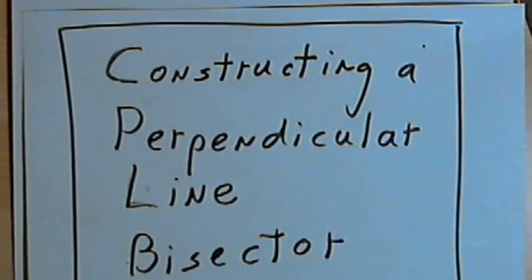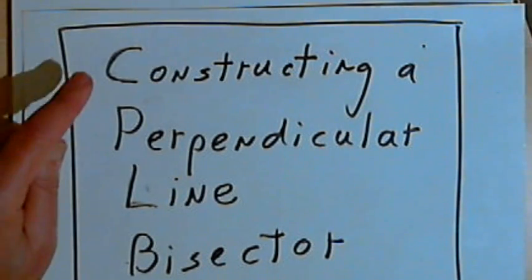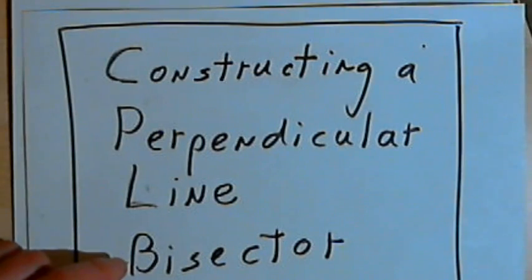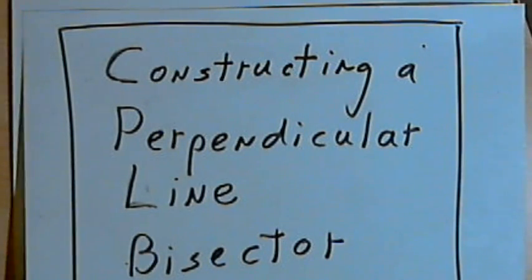This video is provided as supplementary material for courses taught at Howard Community College. In this video, I'm going to demonstrate how to construct a perpendicular line bisector using a straightedge and a compass.